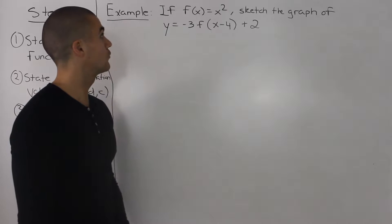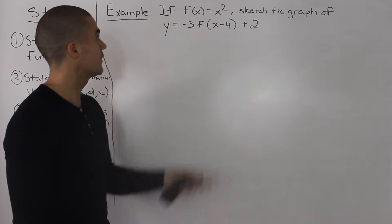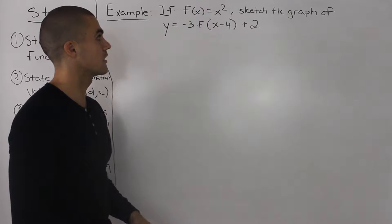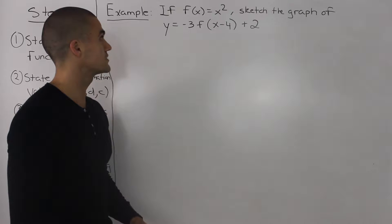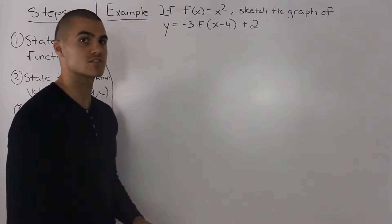In this video we're going to go through this example. If f of x is equal to x squared, sketch the graph of y is equal to negative 3 f of x minus 4 plus 2.